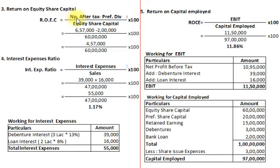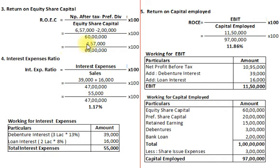The third ratio is return on equity share capital. Formula: net profit after tax minus preference dividend, divided by equity share capital, multiplied by 100. Net profit after tax Rs. 6,57,000 minus preference dividend Rs. 2,00,000 (i.e., 10% on Rs. 20,00,000), divided by equity share capital Rs. 60,00,000, multiplied by 100 = Rs. 4,57,000 / 60,00,000 × 100 = 7.62%.